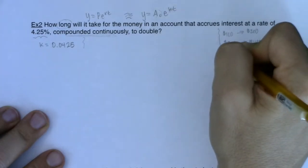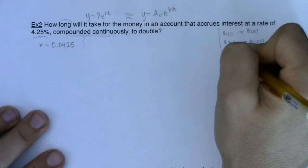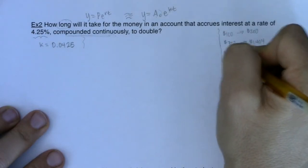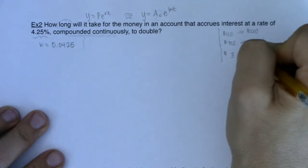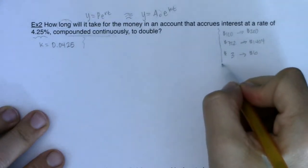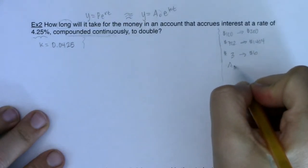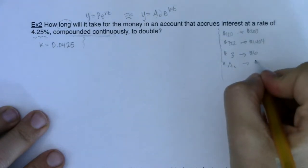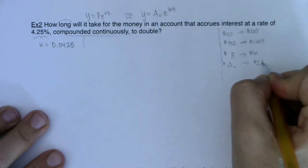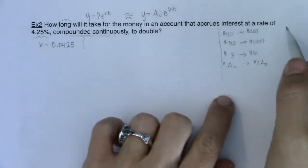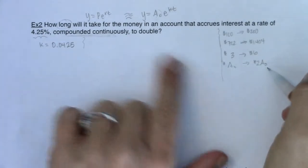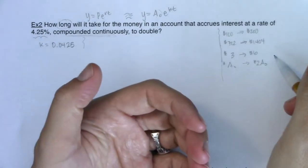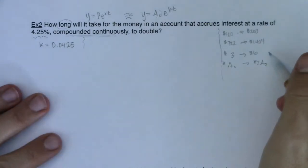So I want us to think about how we would do it if we had A not dollars, what expression would represent doubling? Well, that would be two times A sub zero. So whatever your initial amount is, if you double it, that implies that you're multiplying by two. So let's do that.